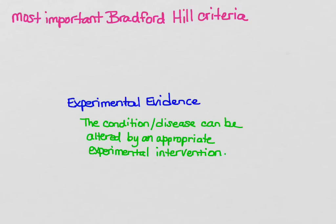Finally, and consistent with what we've talked about so far, experimental evidence provides good support for a causal relationship. If the condition or disease can be altered by an appropriate intervention — such as a randomized controlled trial where you manipulate the exposure and show that it affects the disease — that provides the best kind of evidence for a causal relationship. But that's only if you can do an RCT; when you cannot, the other Bradford Hill criteria are really good rules of thumb for deciding how strong a causal relationship is.